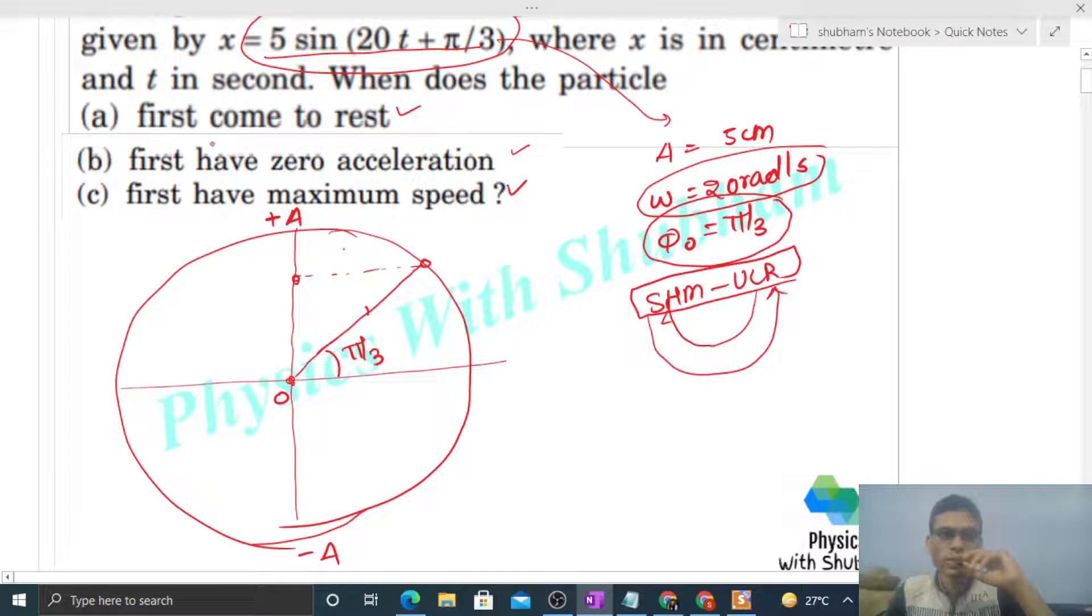We need to find out when it first comes to rest. Now this is the initial position, but is the particle moving in this direction or that direction? You can see 20t + π/3 means this angle increases with time, so as time increases, this angle increases. It means the particle is moving in this direction.